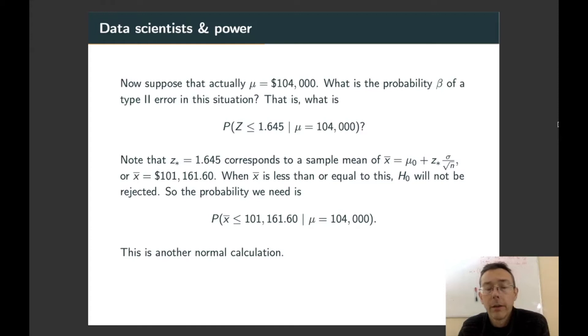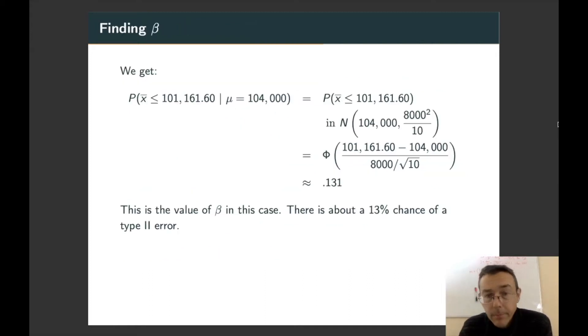In other words, the probability x-bar less than or equal to $101,161.60 given that the population mean is $104,000. So we've got another normal calculation here. We're talking about the probability that x-bar is less than or equal to $101,161.60. In the distribution, it's normal with mean $104,000 and variance $8,000 squared over 10.